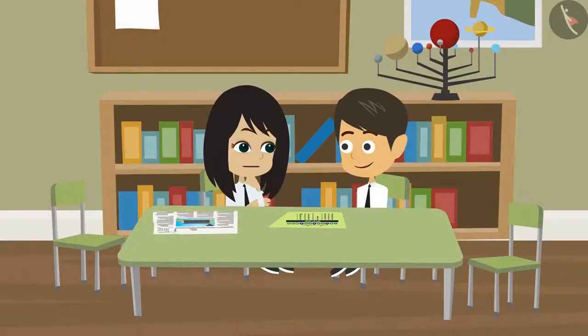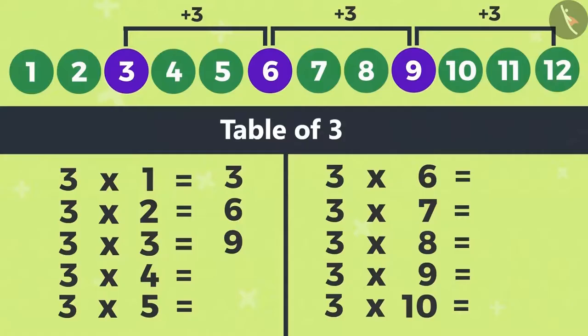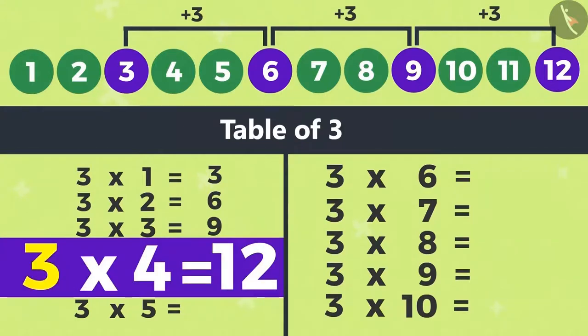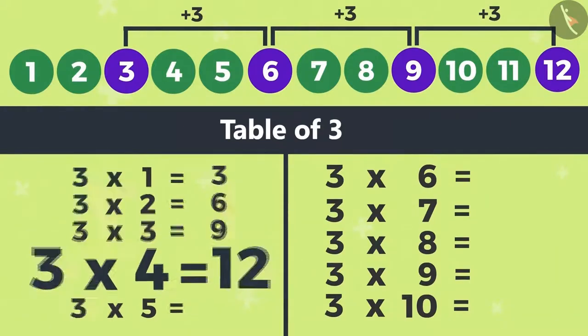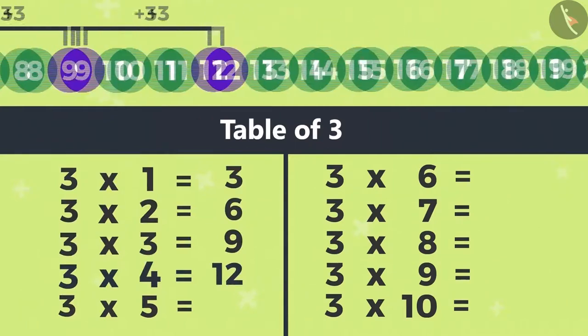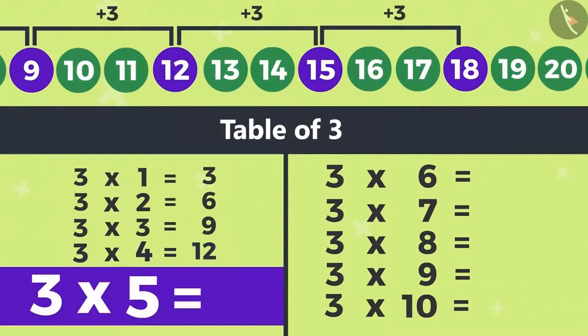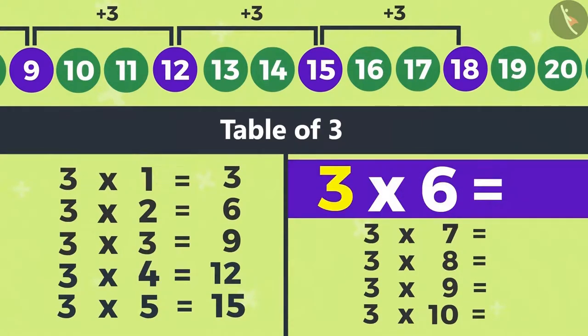Yes, it seems so. I will try. Right now, we are at 9. Three numbers from 9 is 12. That means we write 12 in front of 3 times 4. This makes 3 fours are 12. So the next number will be 15 and the next 18. This means 3 fives are 15 and 3 sixes are 18.